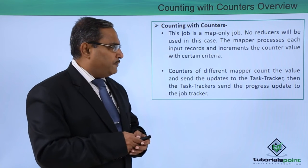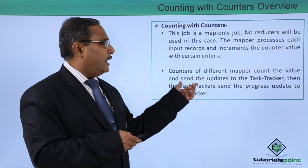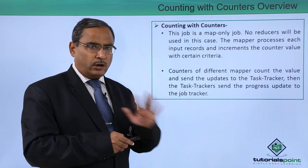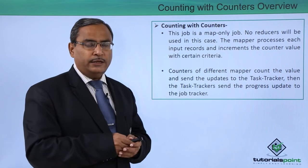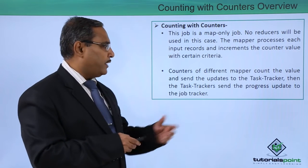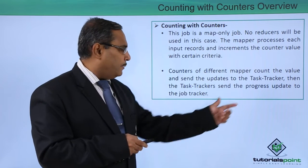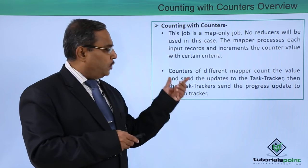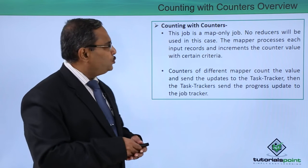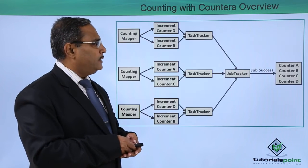Counters from different mappers count the value and send updates to the task tracker. We have no reducer, but we have a task tracker and a job tracker. The task tracker sends progress updates to the job tracker, and the job tracker produces the final output.